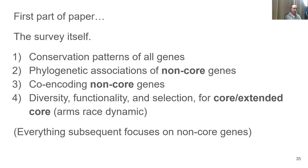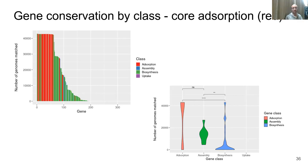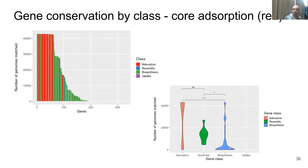For the first part of the paper, I'm looking at patterns of these genes across the species: how are these conserved, what are the phylogenetic associations at the clonal complex level, how are non-core genes co-encoded, and what are the levels of diversity, functionality, and selection? Looking at gene conservation, I plotted genes from most to least conserved across roughly 43,000 genomes. The vast majority of the most conserved genes are adsorption genes — core genes. Below that are mainly biosynthesis. Visualizing as a violin plot: adsorption genes are the most conserved, followed by assembly at intermediate conservation, and then biosynthesis, many of which are incredibly poorly conserved.